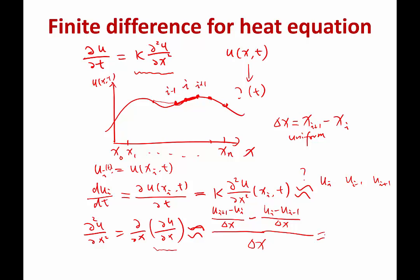And we collect the terms. What we get is ui plus 1 plus ui minus 1 minus 2 times ui divided by delta x squared. That is a standard way to approximate the second order derivative using finite difference.